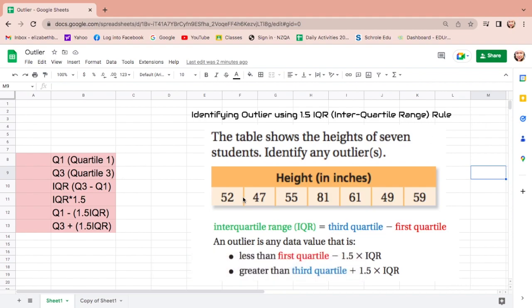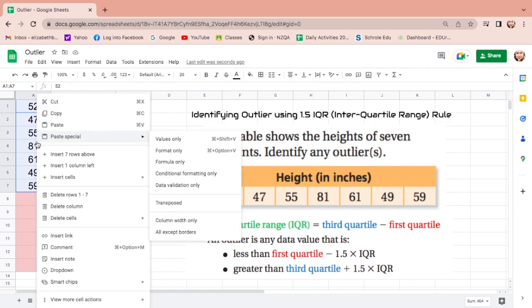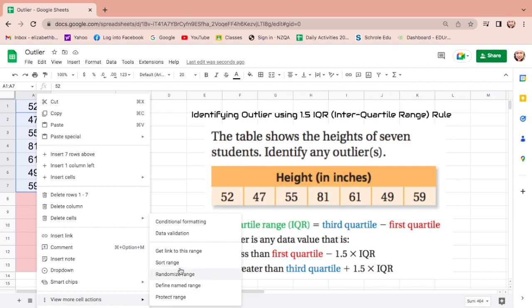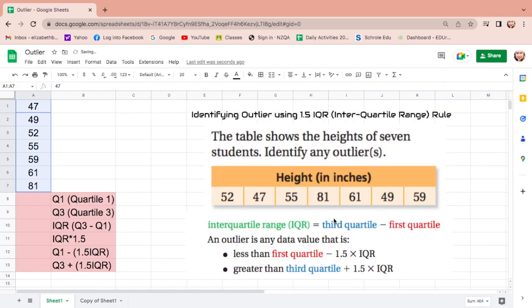First, let us put all the data here. After putting all the data, sort this out from least to greatest by highlighting it. Right-click and find Sort Range, from least to greatest, and there you go.